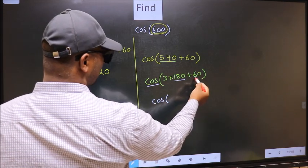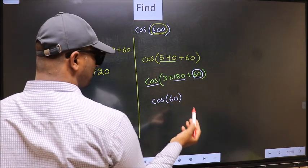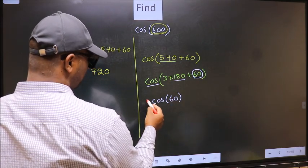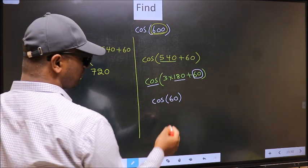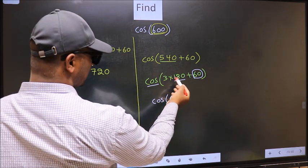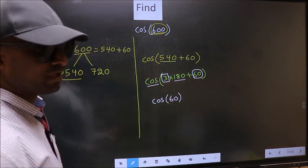And inside, we get this angle 60. Now the question is, will we get here plus or minus? To answer that, we should look at the number before 180. That is 3. And 3 is odd.